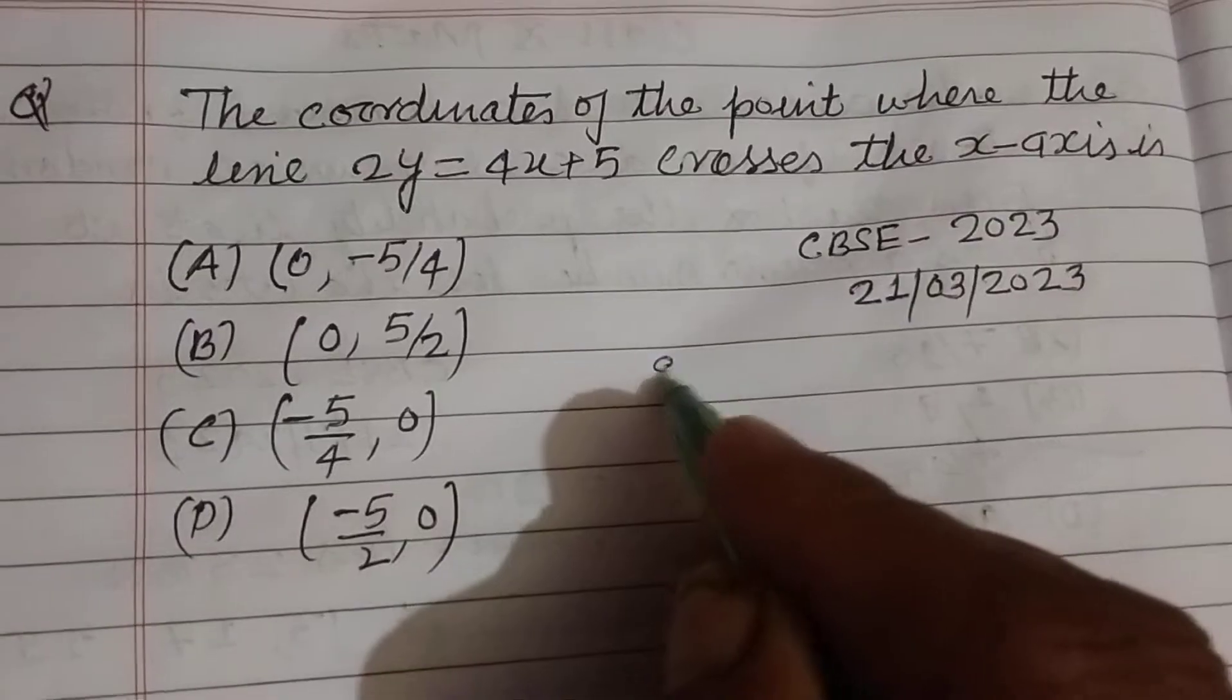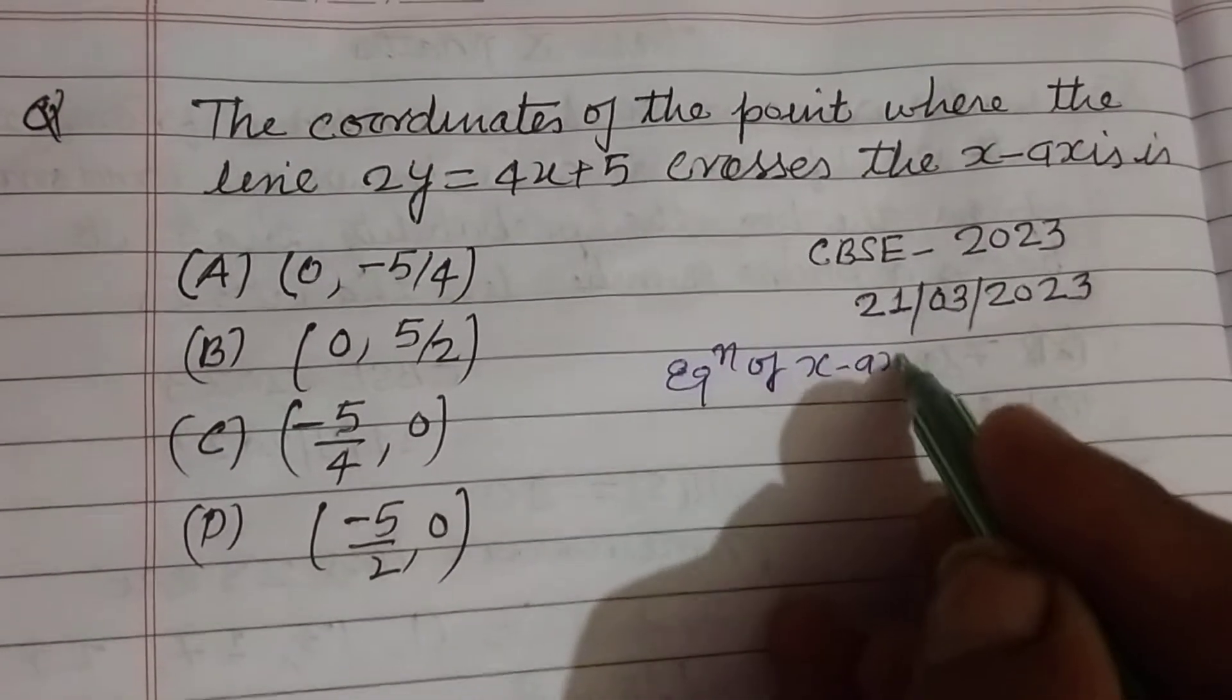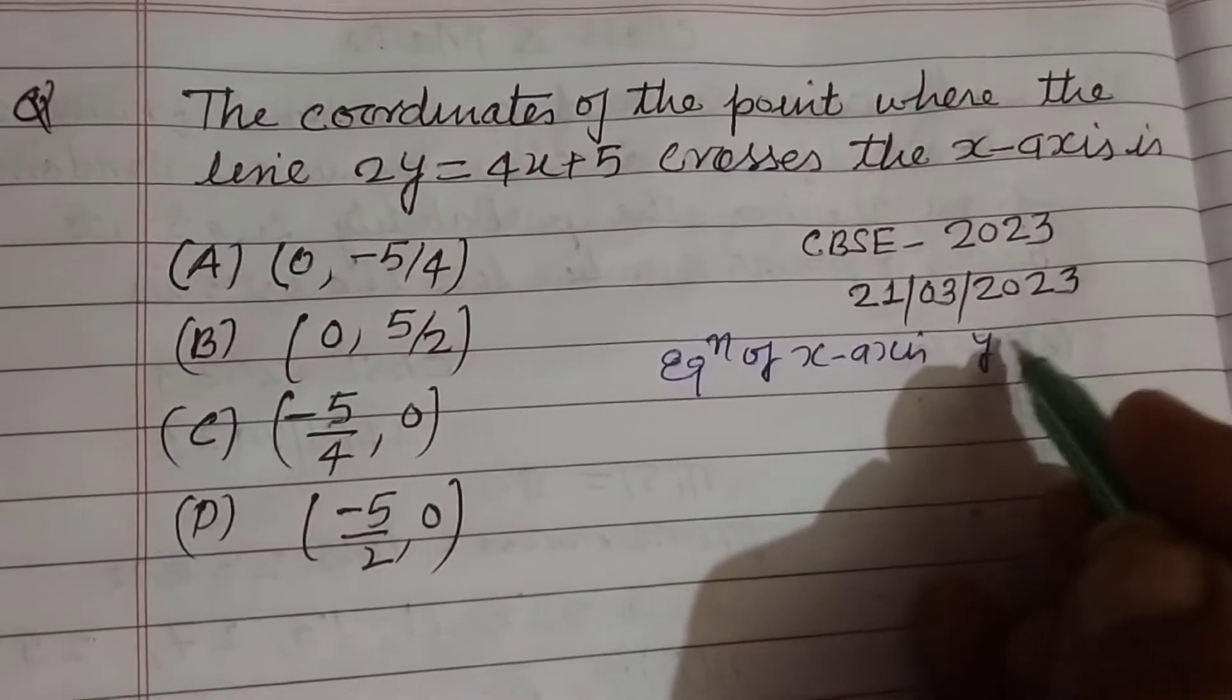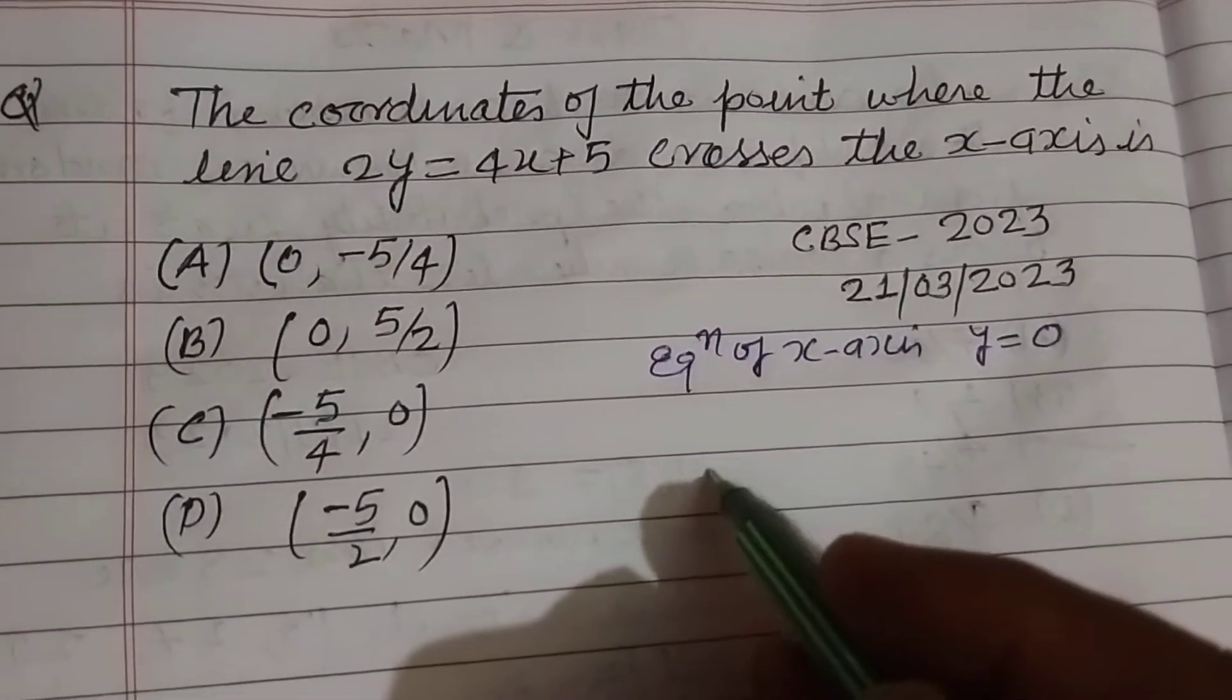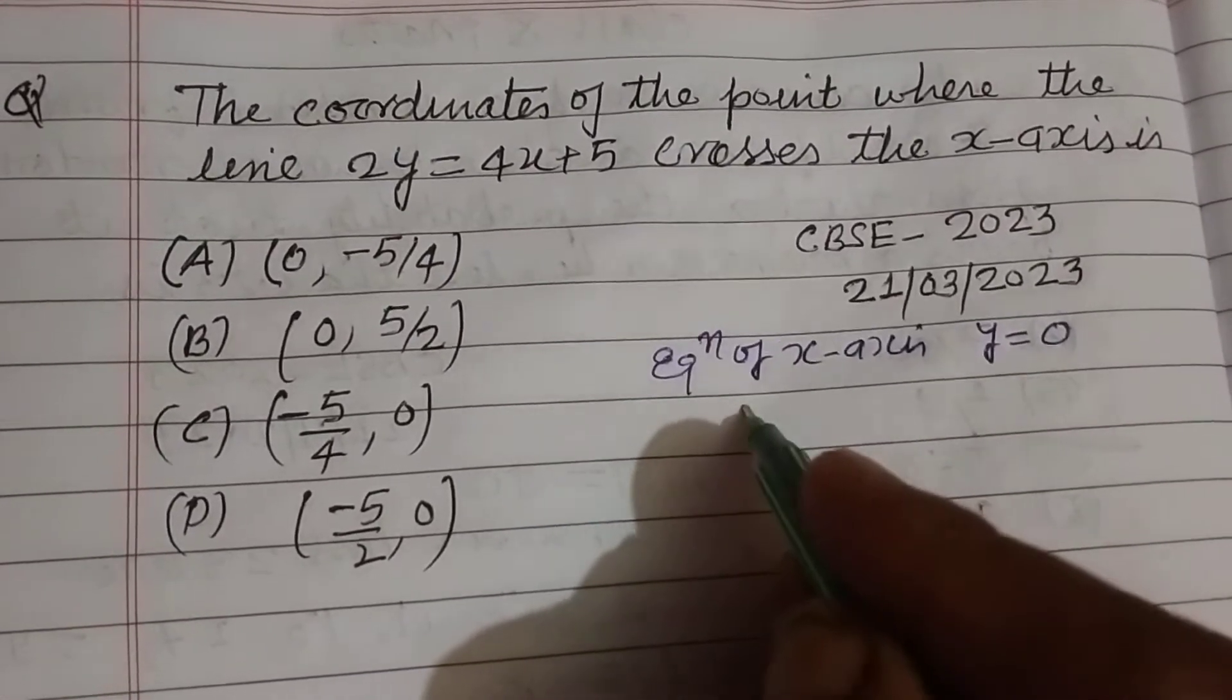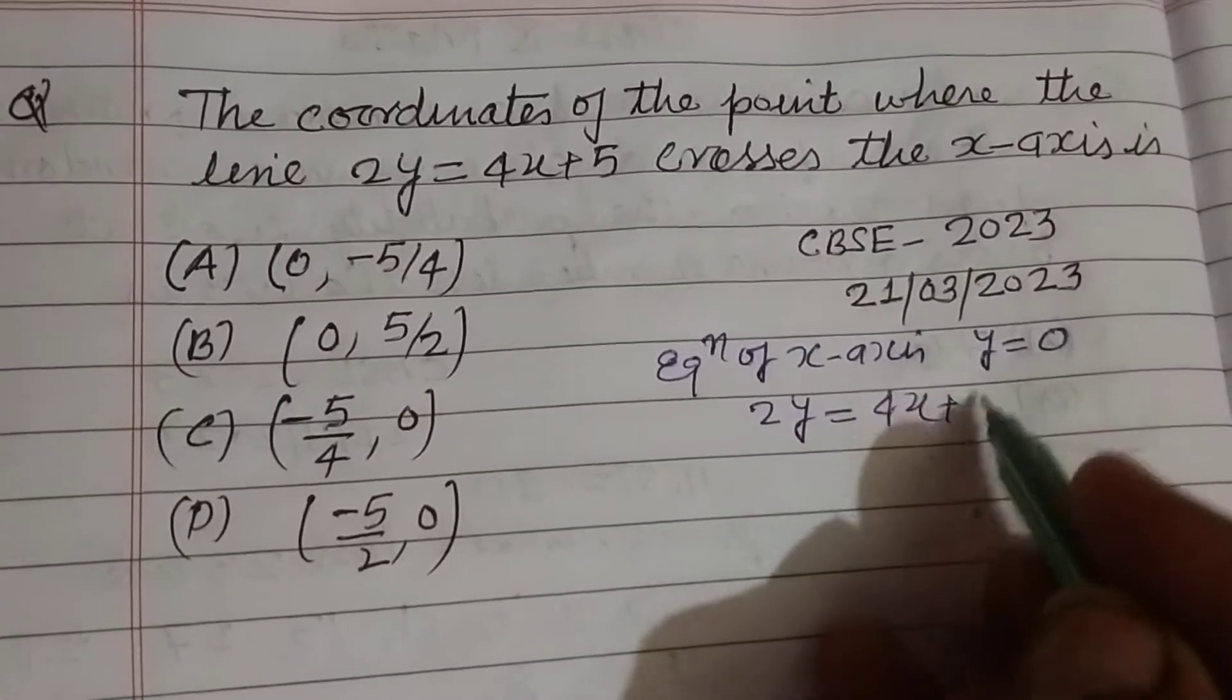The equation of the x-axis is y equals 0. This is the equation of the x-axis, and the given line is 2y equals 4x plus 5.